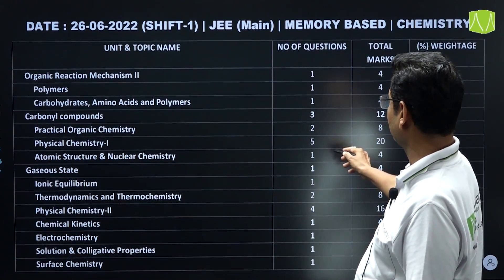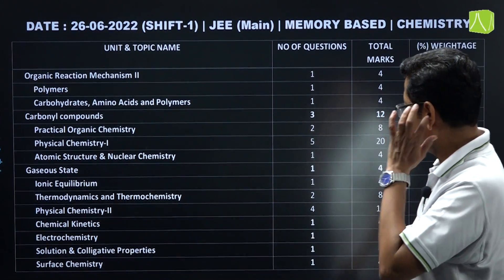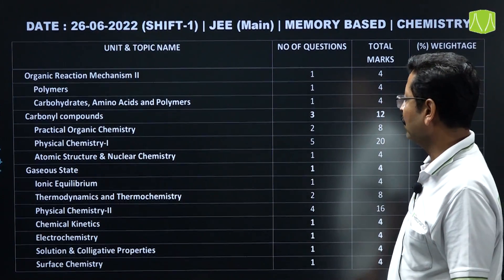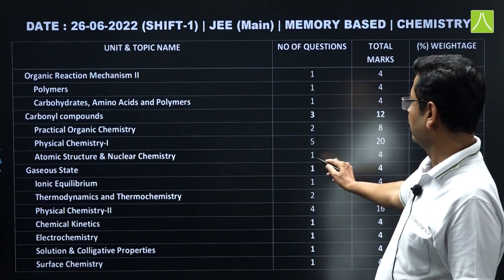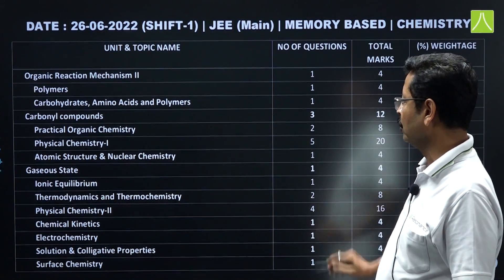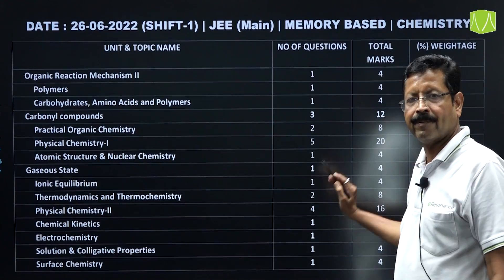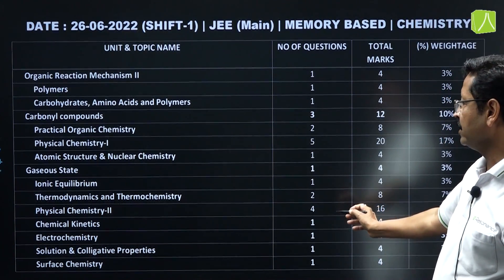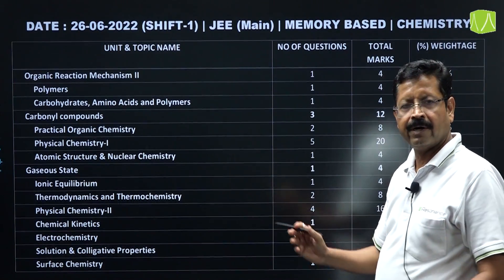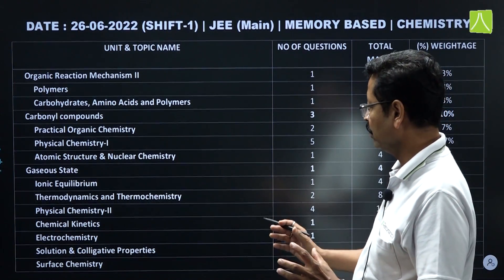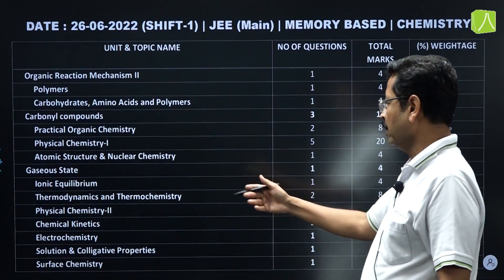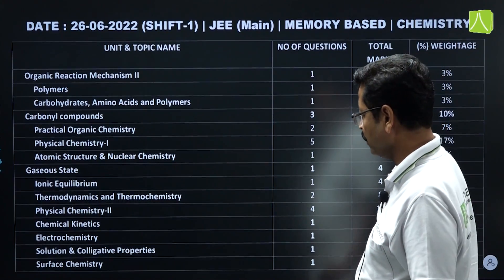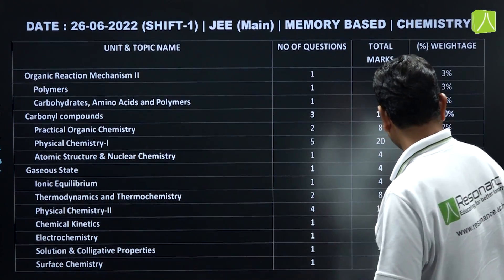Physical chemistry: Class 11th part had 5 questions and Class 12th had 4 questions. Topics included: atomic structure, gaseous state, ionic equilibrium, thermodynamics and thermochemistry — 2 questions, kinetics — 1 question covering half-life and integrated rate law for first order, electrochemistry — 1, liquid solutions with colligative properties (depression in freezing point), and surface chemistry — 1.